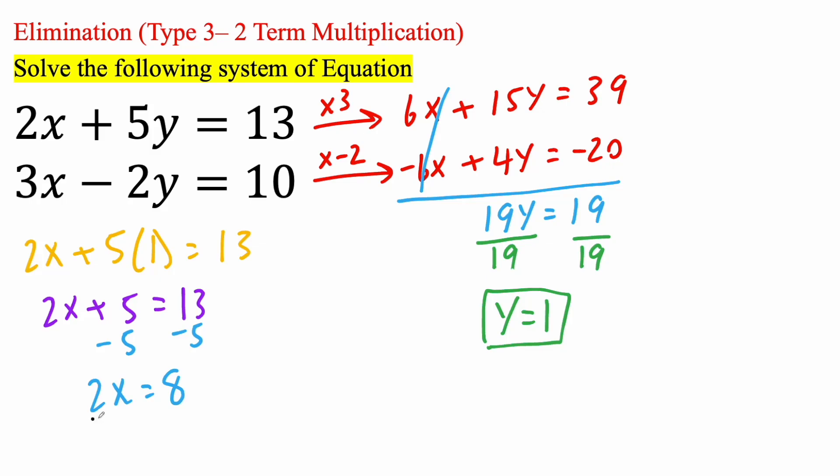And so, it's saying 2 times x. So, divide by 2, divide by 2, and x is going to equal 4. So, now we have x and y.